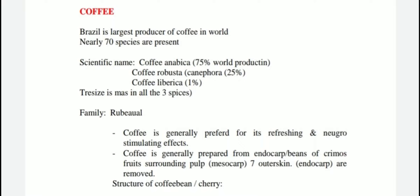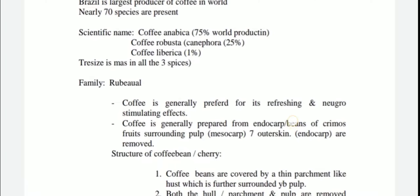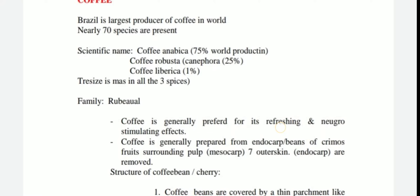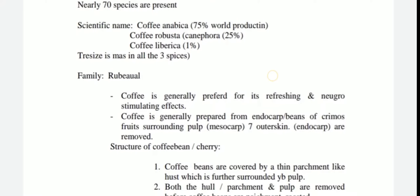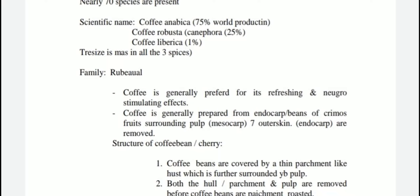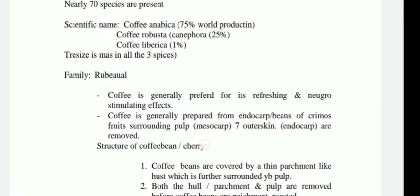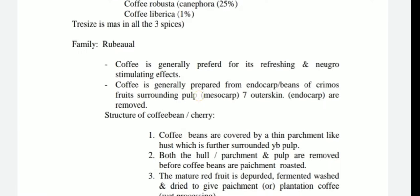Coffee is native to Brazil, which is the largest producer of coffee in the world. Nearly 70 species of coffees exist. The scientific or botanical name is Coffea arabica. Coffea arabica accounts for 75% of world production, Coffea robusta 25%, and Coffea liberica 1%. These are the three main species used in the world.